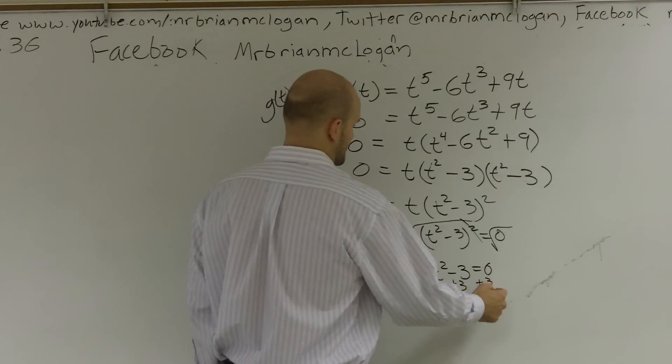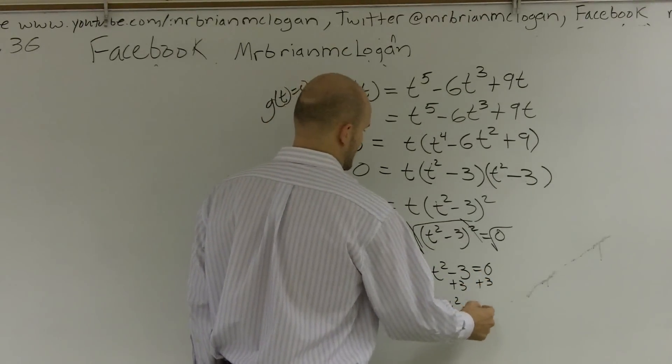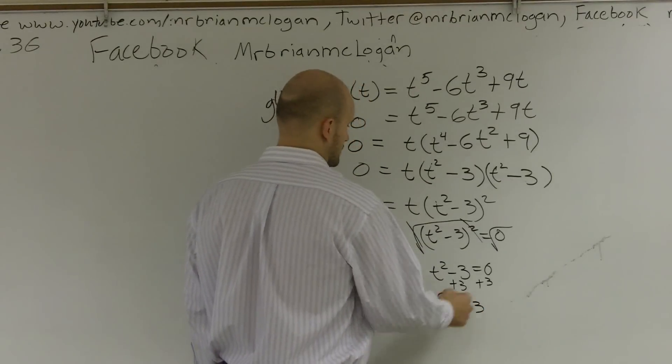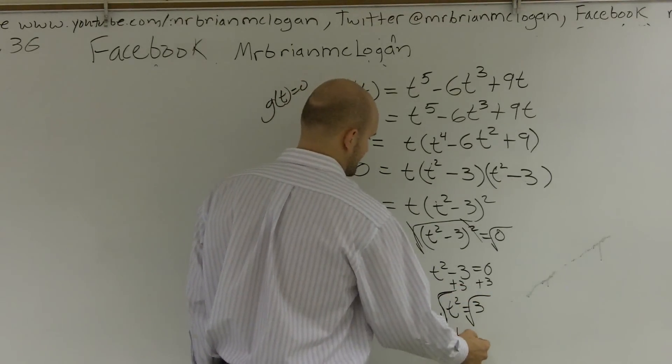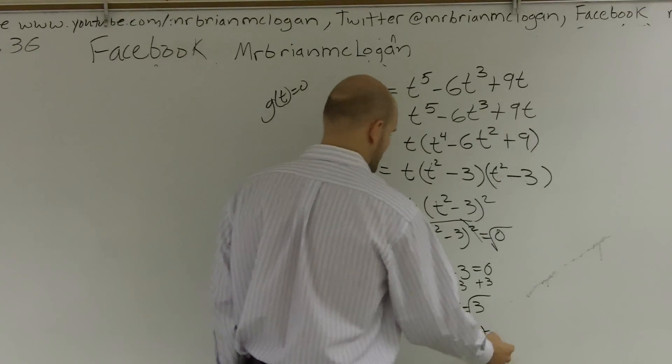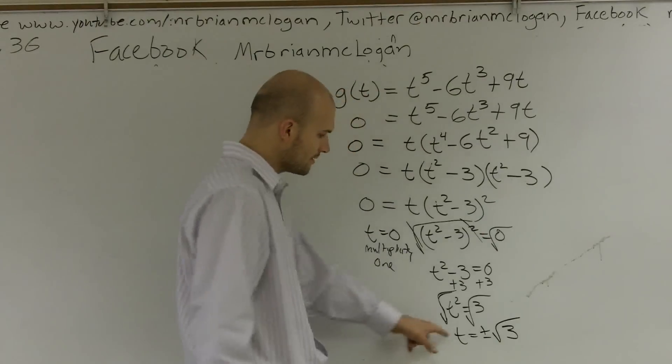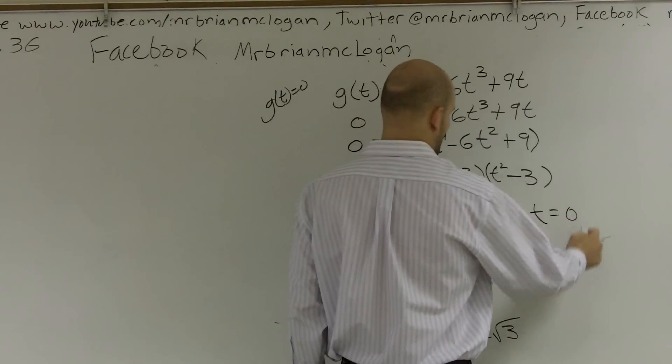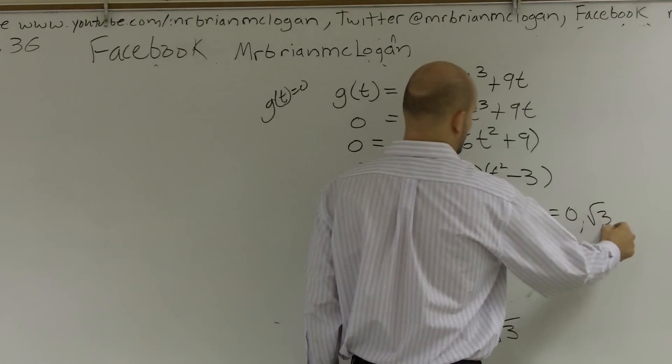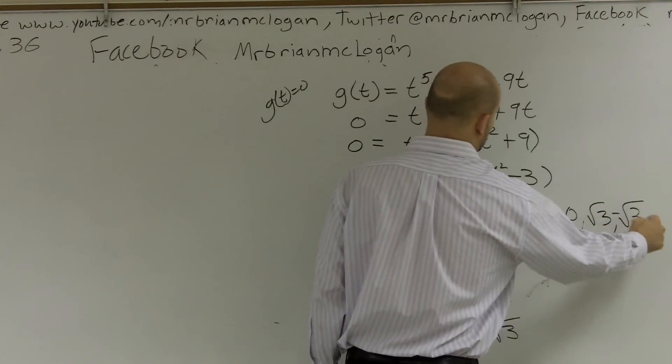Add three to both sides. t squared equals three. Square root. t equals plus or minus the square root of three. Now, my factors, t is equal to zero, square root of three, negative square root of three.